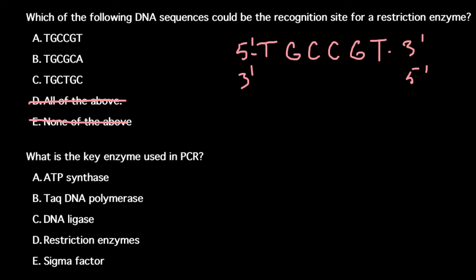The other strand sequence would be: T base pairs with A, G with C, C with G, C with G, G with C, and T with A.